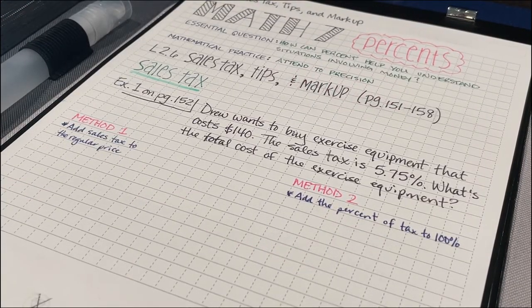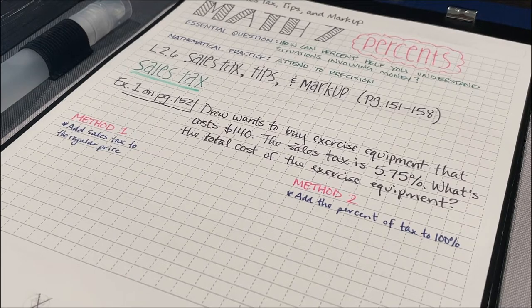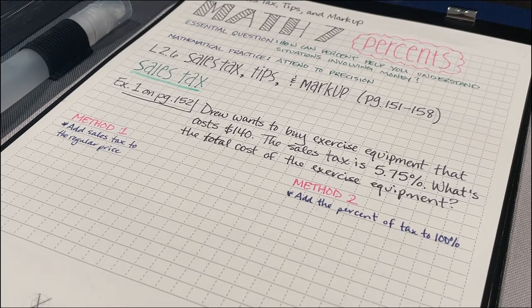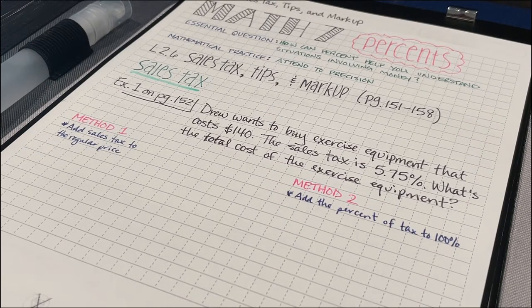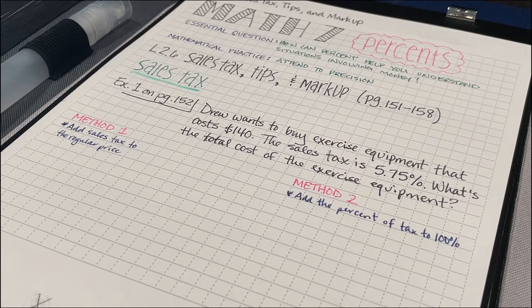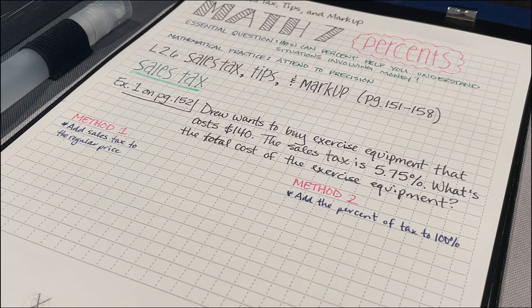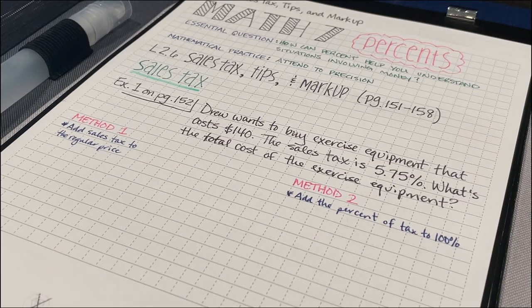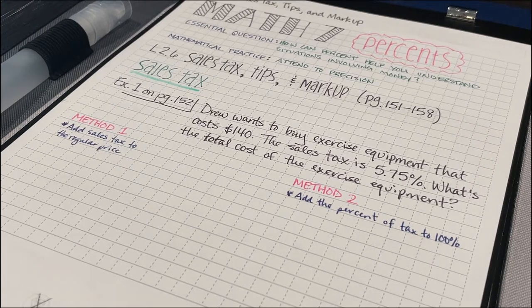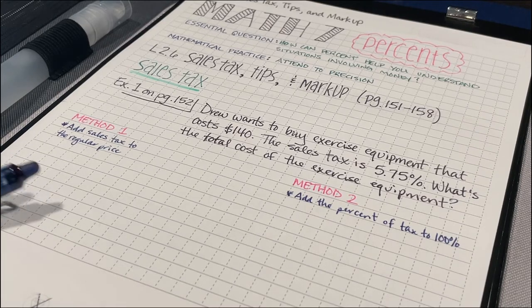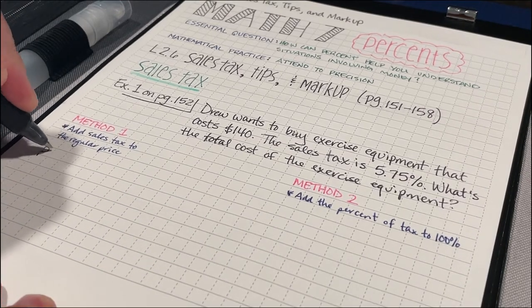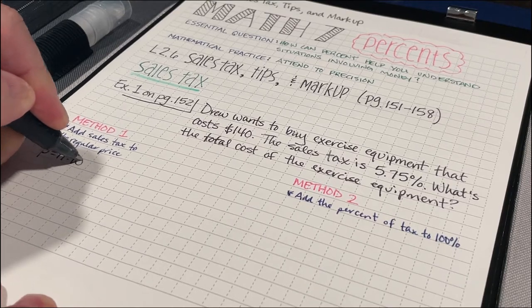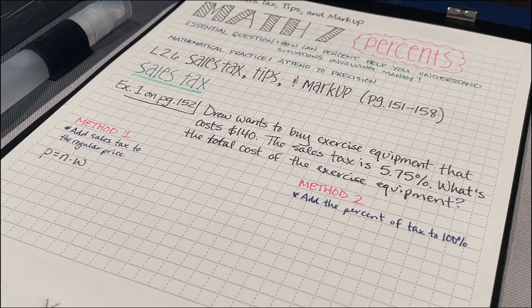Let's start out with example one on page 152. So Drew wants to buy exercise equipment that costs $140. The sales tax is 5.75%. What we want to find out is what's the total cost of the exercise equipment. So that'll be the cost plus whatever is being taxed. Now, we can think about this in two different ways, and we're going to focus on method one first, where we're going to add the sales tax to the regular price. The way that I'm going to think about this is part equals percent times whole.